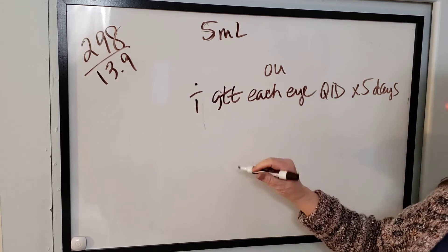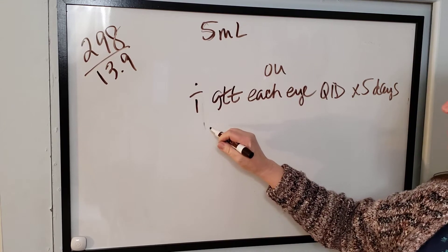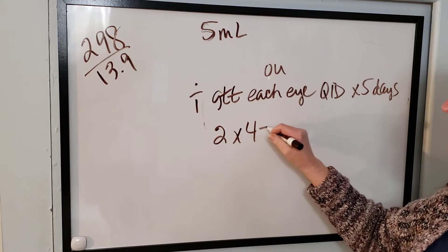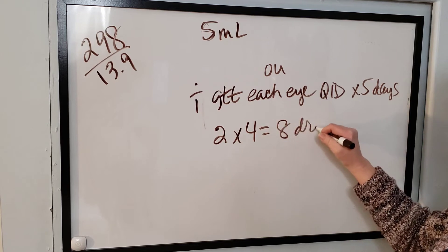So if they're taking one drop in each eye, that's one drop in the right eye, one drop in the left eye. So that's two drops four times a day is eight drops per day.